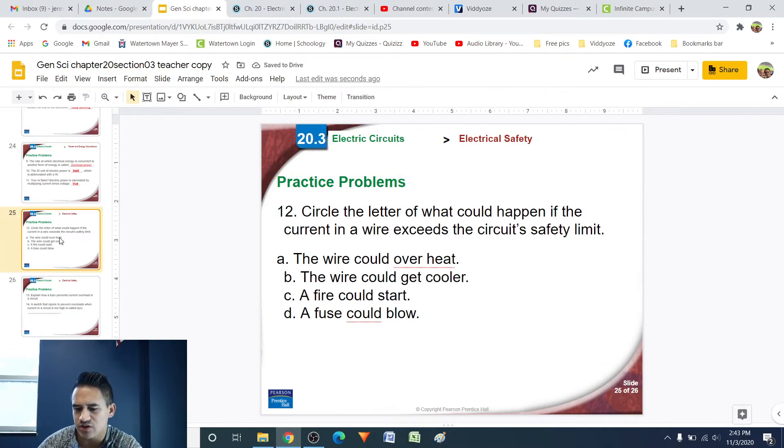Number 12, circle the letter of what could happen if the current in a wire exceeds the circuit's safety limit. Alright. So, the thing to understand with current is, if current gets high, remember, there's always going to be resistance. There's always going to be resistance in any material, whether it be a conductor or an insulator. The larger the current gets, the more energy is flowing through that object, and the more resistance there will be, because the object is going to get hotter, because there's friction. So, the faster things are traveling through there, the more friction there's going to be, which is going to raise the temperature,